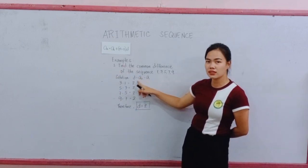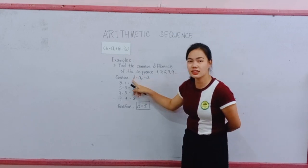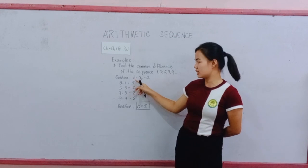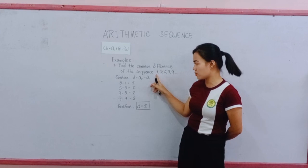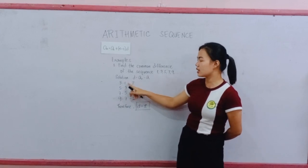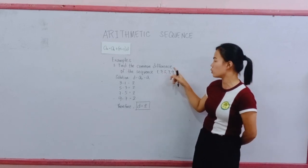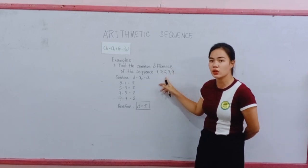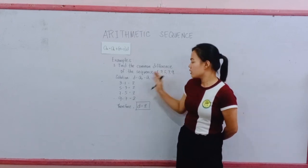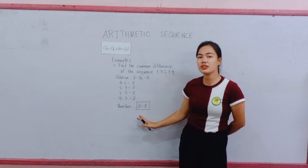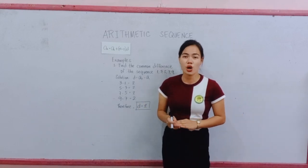D equals A sub 2 minus A sub 1. D is our common difference. Our A sub 2 is 3. Our A sub 1 is 1. So 3 minus 1 equals 2. Then, next is 5 minus 3 equals 2. 7 minus 5 equals 2. And 9 minus 7 equals 2. So therefore, our common difference now is 2. That is the process on how to get the common difference.